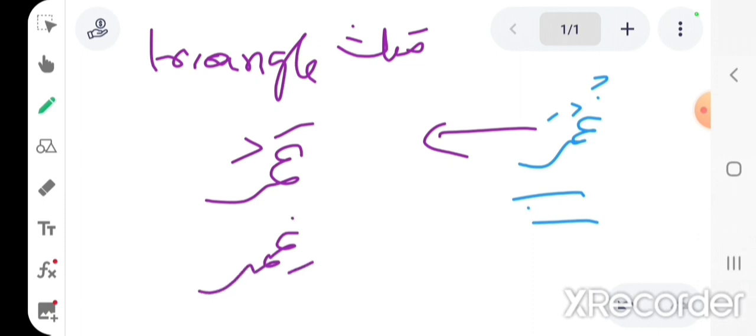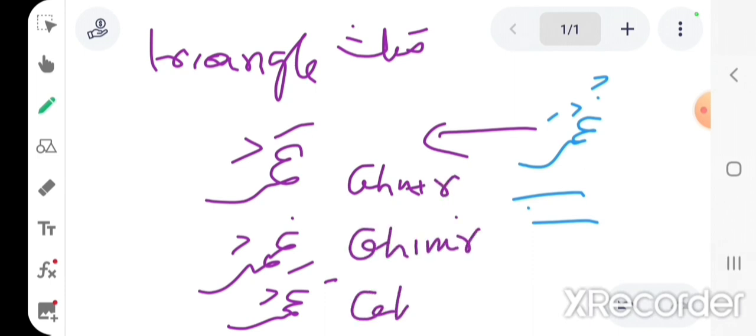So ghamr and ghimr and ghumr, that's a linguistic triangle. So only vowels are changing: ghamr and ghimr and ghumr.